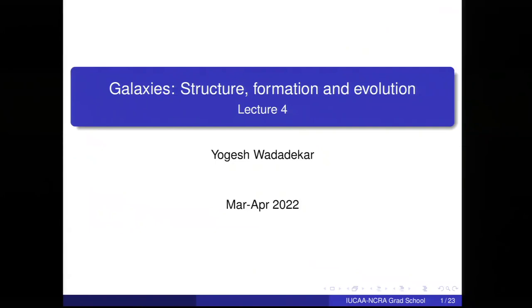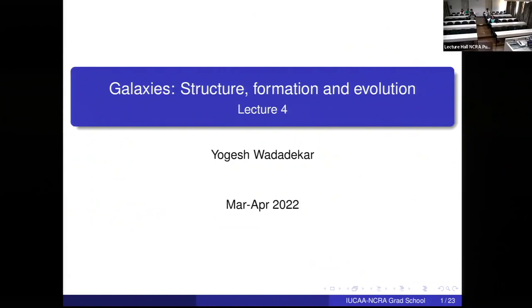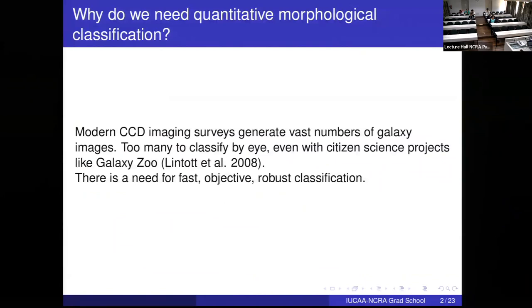Let's begin with lecture four. Today we take a slightly different turn. So far we have been looking at galaxies — the structure of galaxies as individual objects — looking at bulges, disks, and trying to figure out whether an object is elliptical, lenticular, or something else. But today we are going to look at what is called quantitative morphology. Quantitative morphological classification has become very important in recent years because modern large-area digital imaging surveys carried out with CCD cameras generate vast numbers of galaxy images.